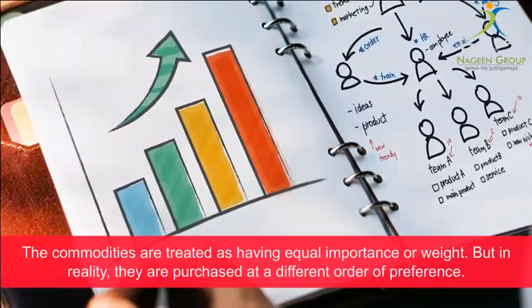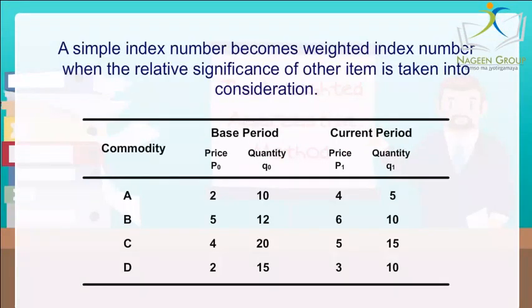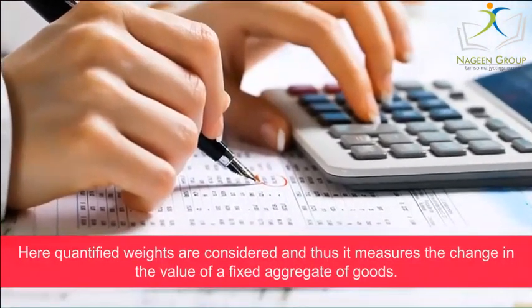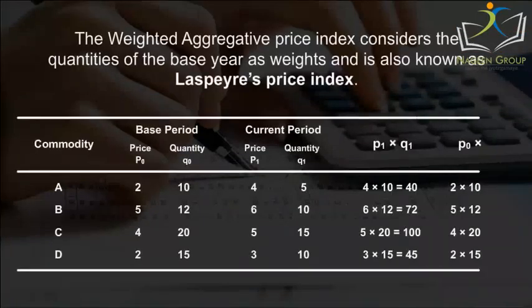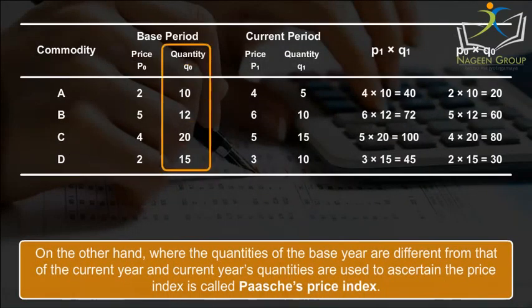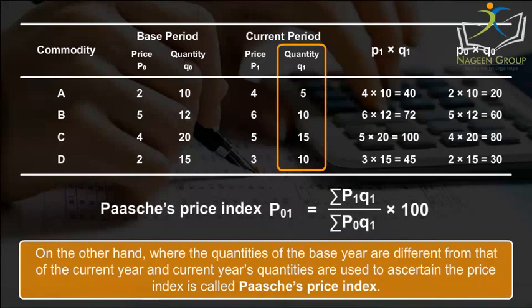The commodities are treated as having equal importance or weight, but in reality they are purchased at a different order of preference. The Weighted Aggregative Method: A simple index number becomes a weighted index number when the relative significance of each item is taken into consideration. Quantified weights are considered, measuring the change in the value of a fixed aggregate of goods. When quantities of the base year are used as weights, it is known as Laspeyres' price index. When current year quantities are used, it is called Paasche's price index.